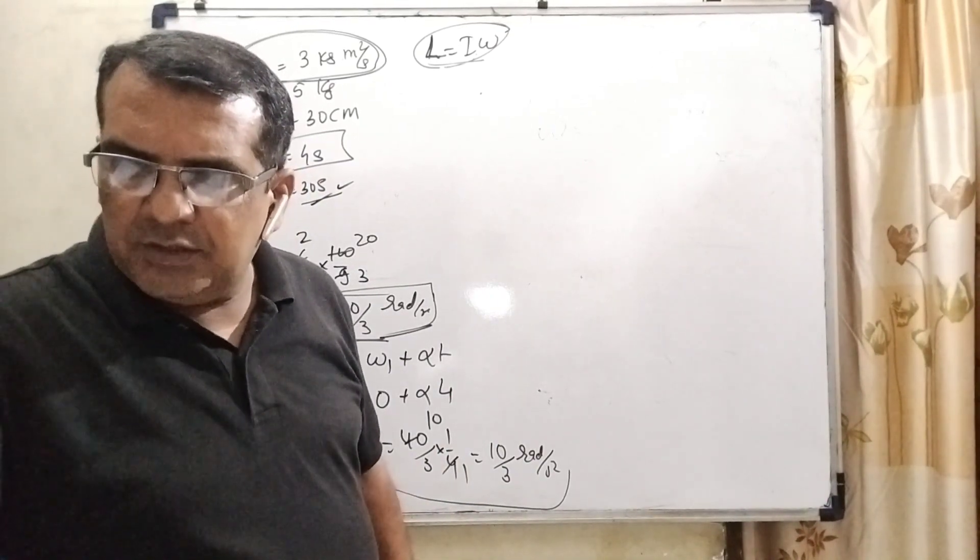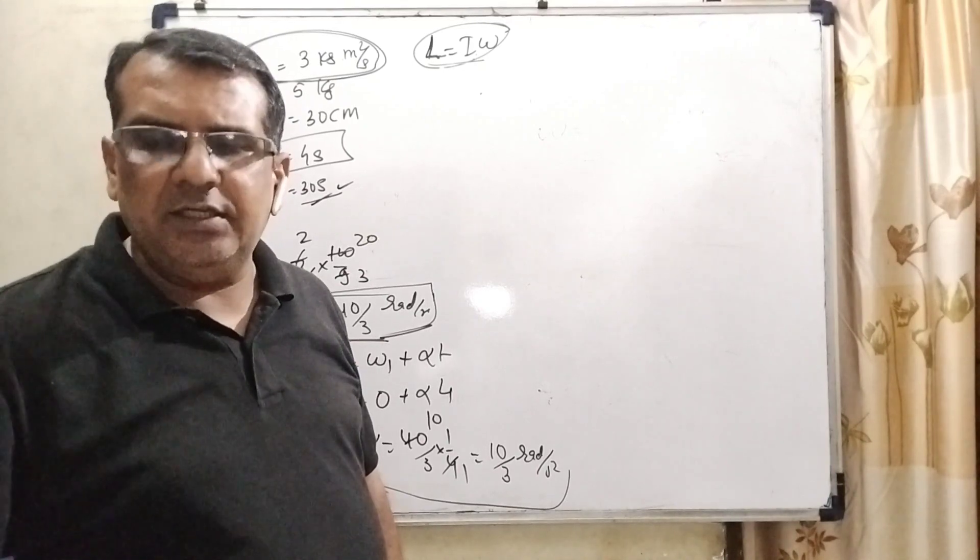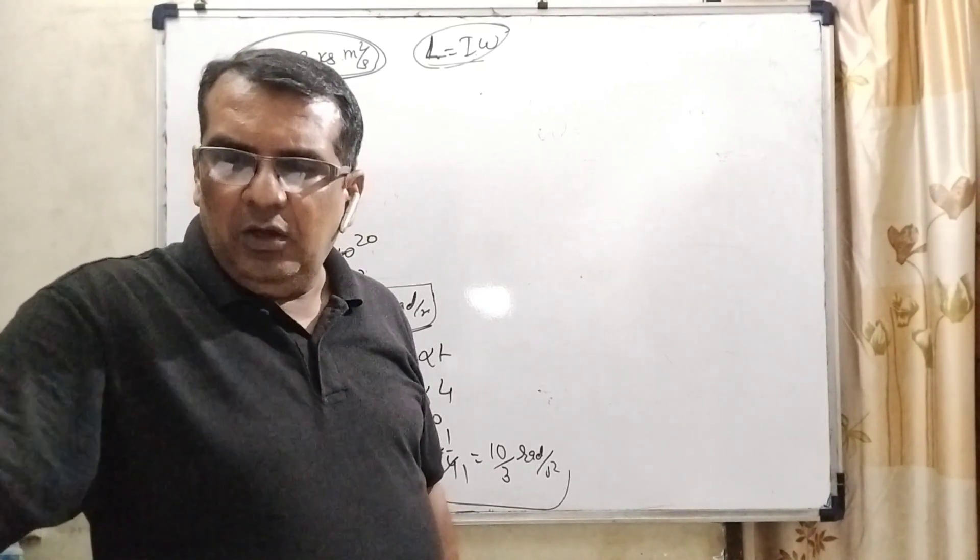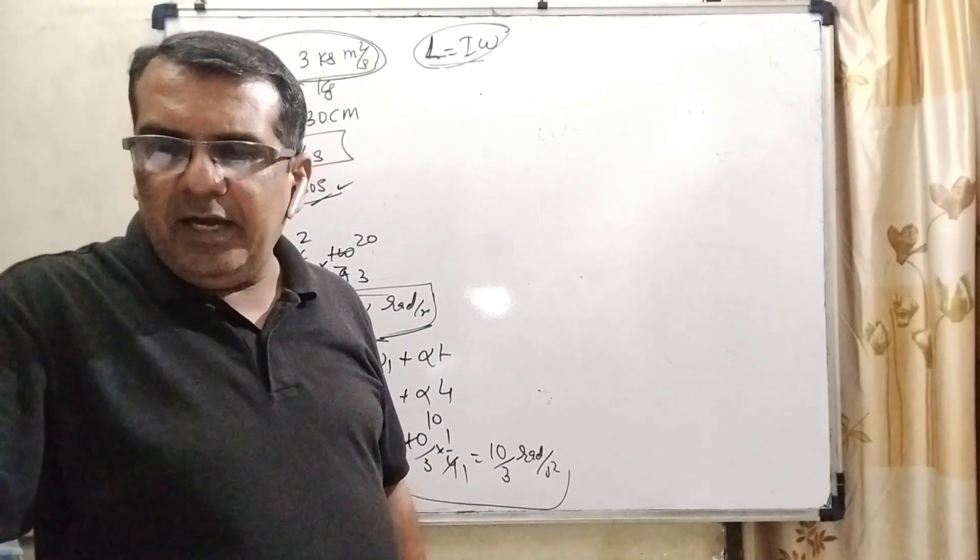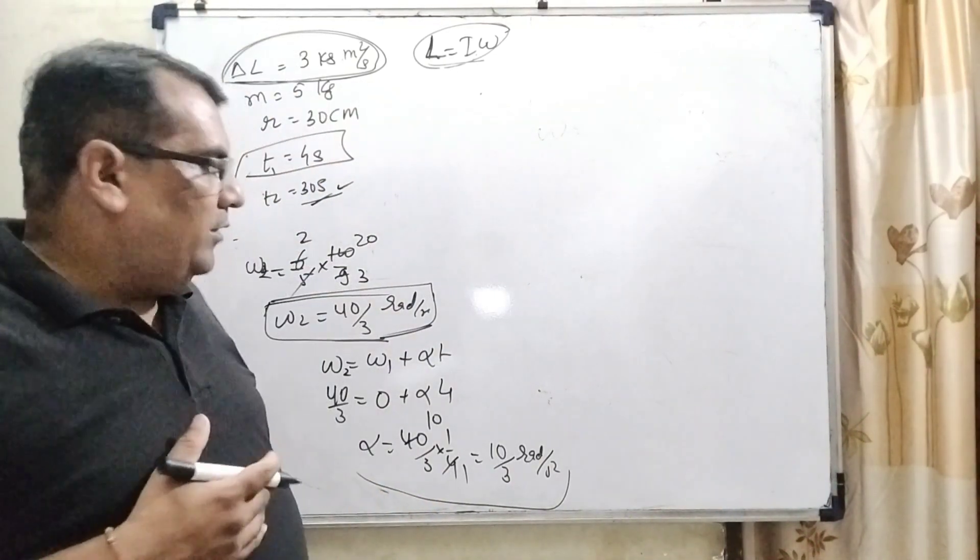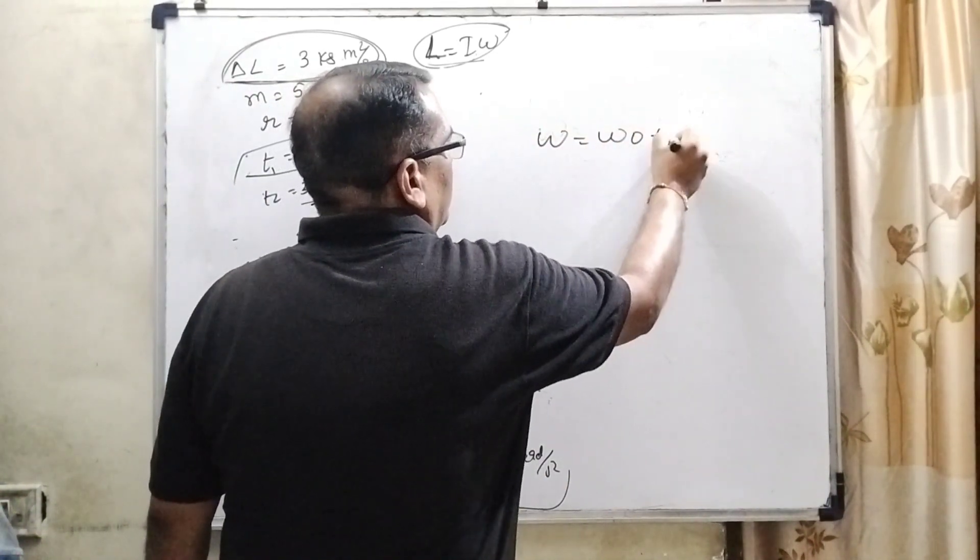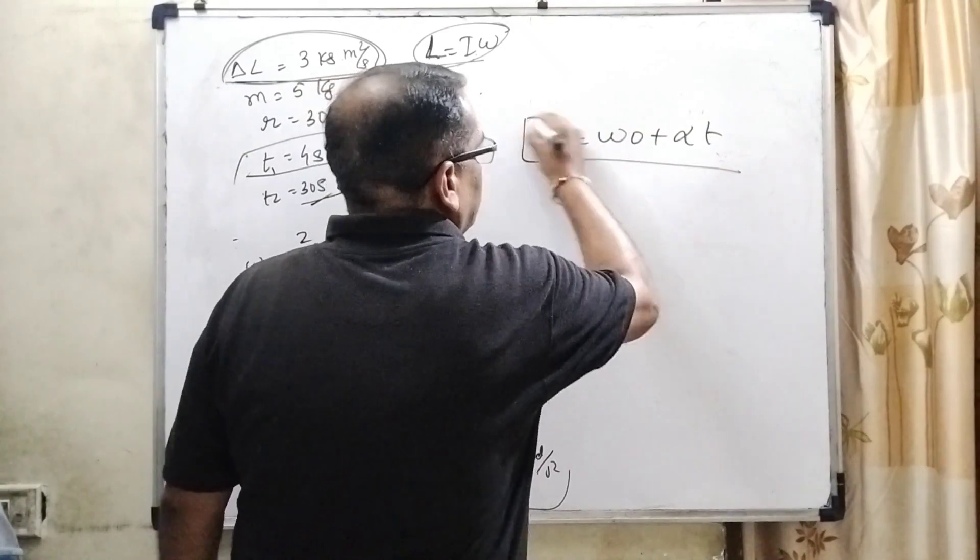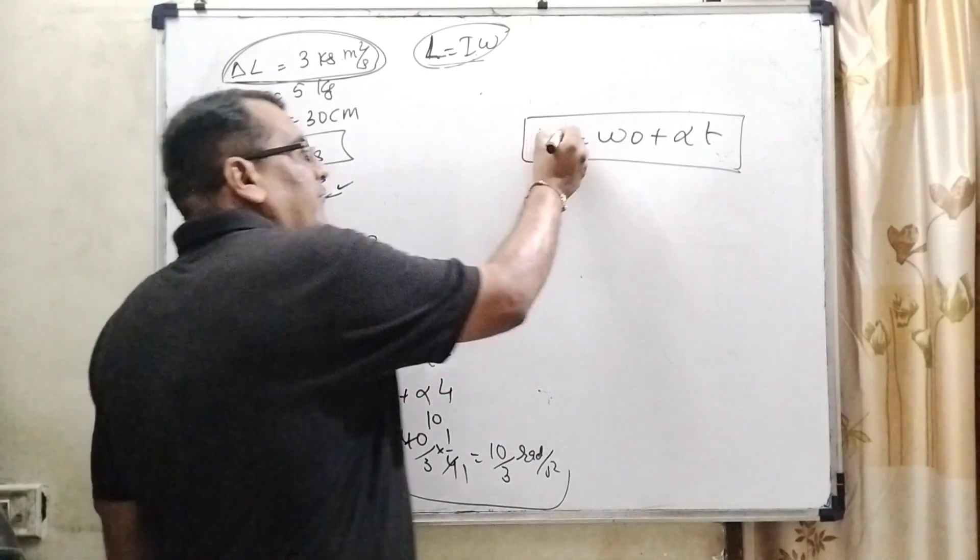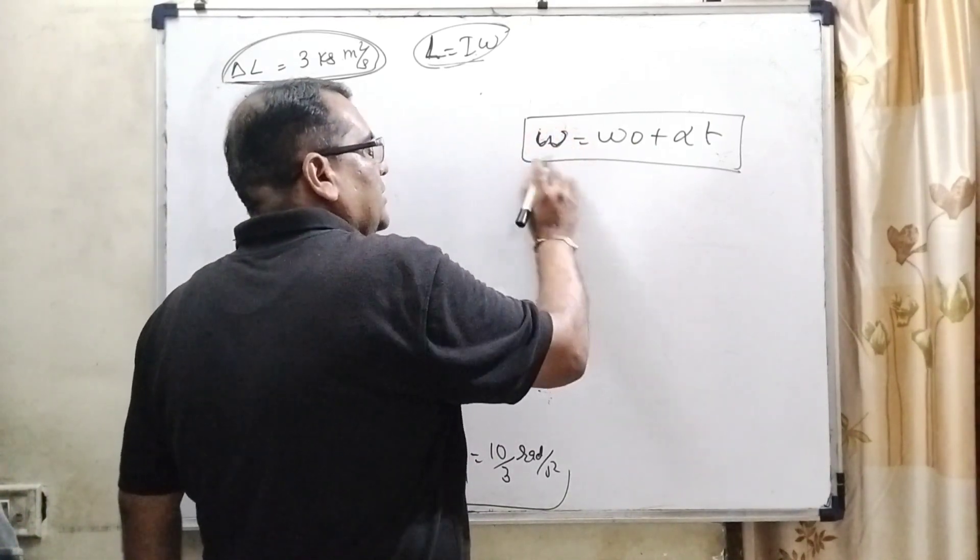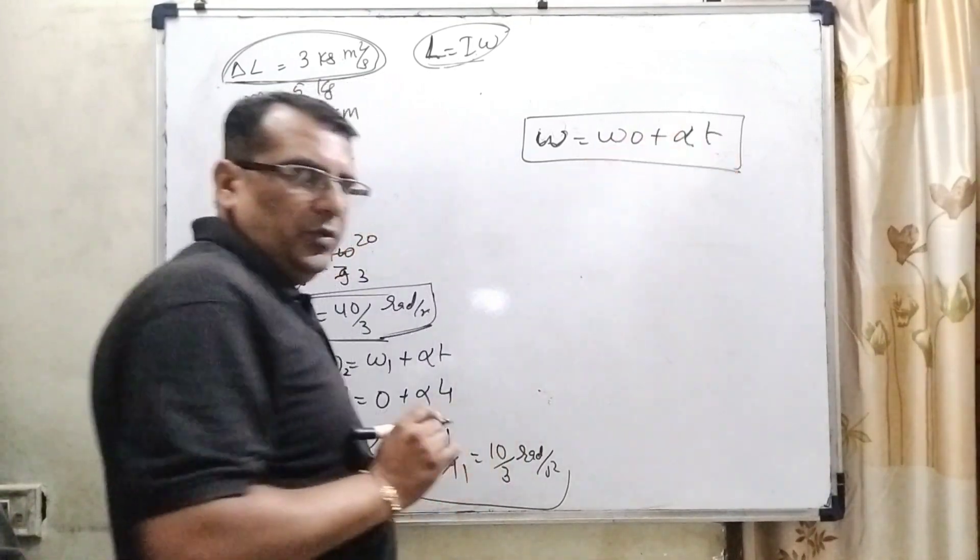Now the next part of this question: what is the angular speed of the cylinder after 30 seconds of the initial impulse? This is a very important point. The cylinder was at rest initially. So again we use the rotational kinematic equation: ω = ω₀ + αt. This is the first rotational kinematic equation. Here, final angular speed equals initial angular speed plus angular acceleration times time. But here, given that initially the object is at rest, we put ω₀ = 0.